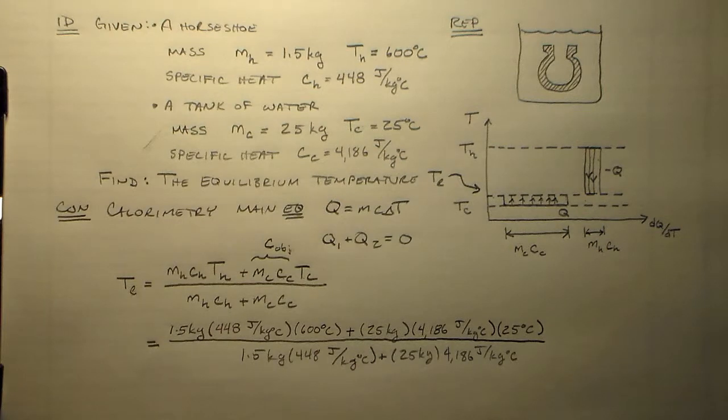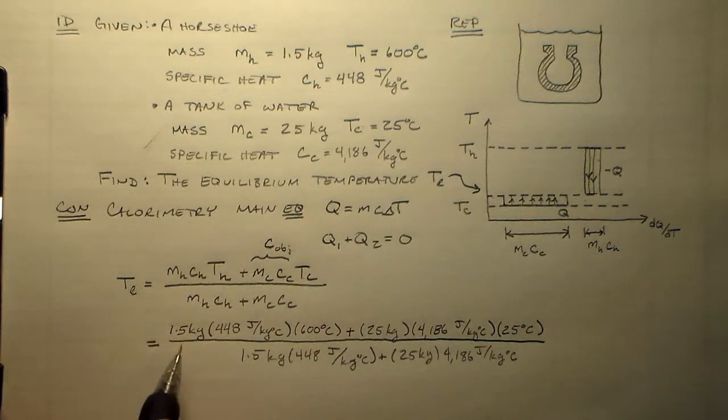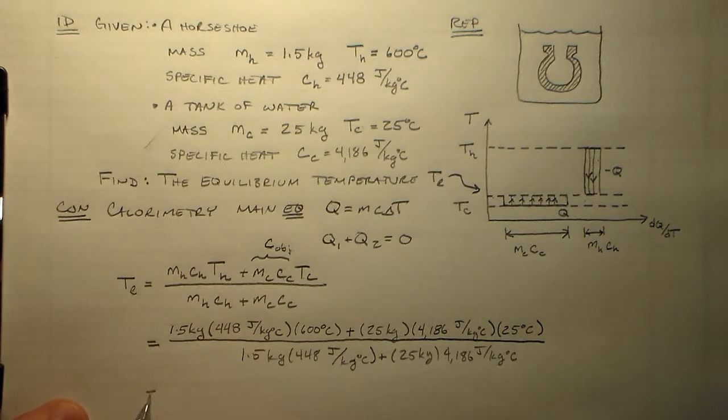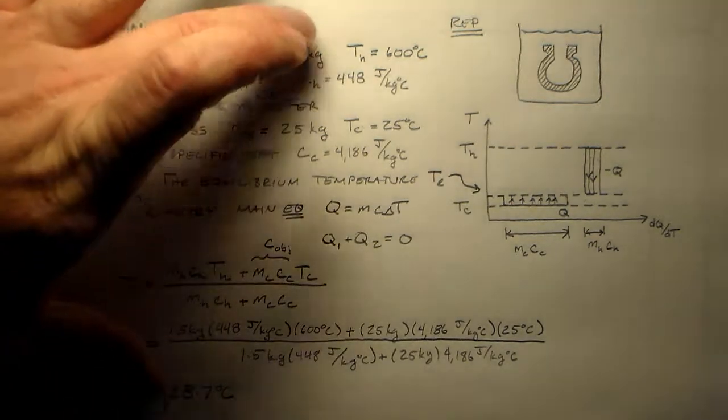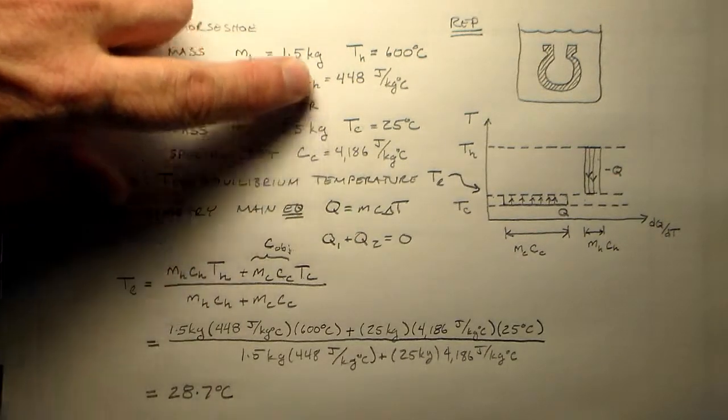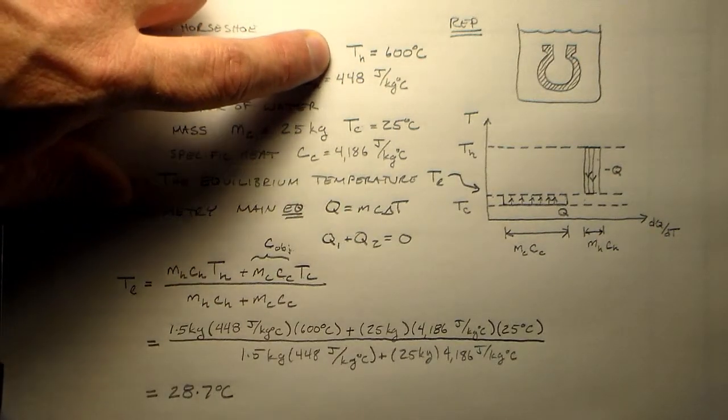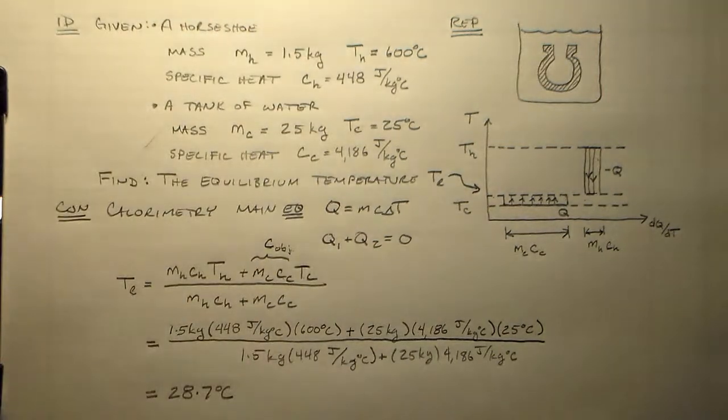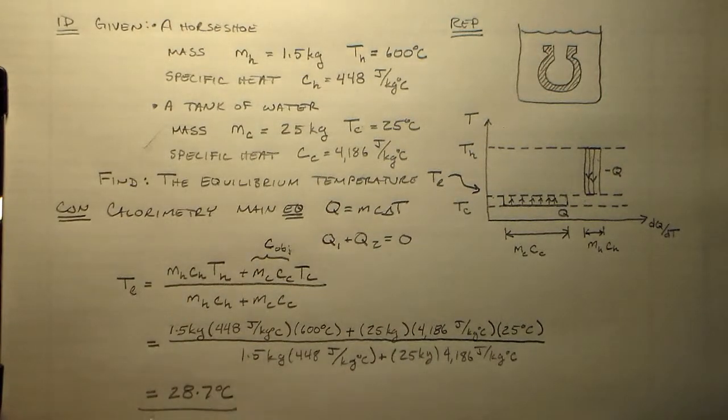To multiply these things out, we do the top and the bottom. Lots of fun watching me do that, so I won't show that to you. Instead, I will just tell you that this is 28.7 degrees C. Like I said, much, much closer to the initial temperature of the water than to the initial temperature of the horseshoe. Thank you very much.